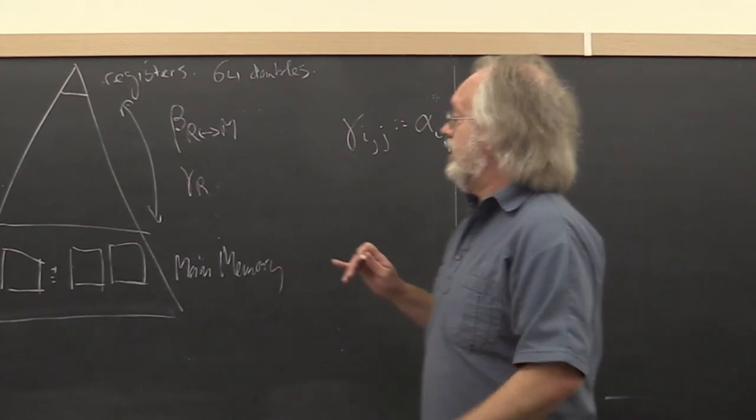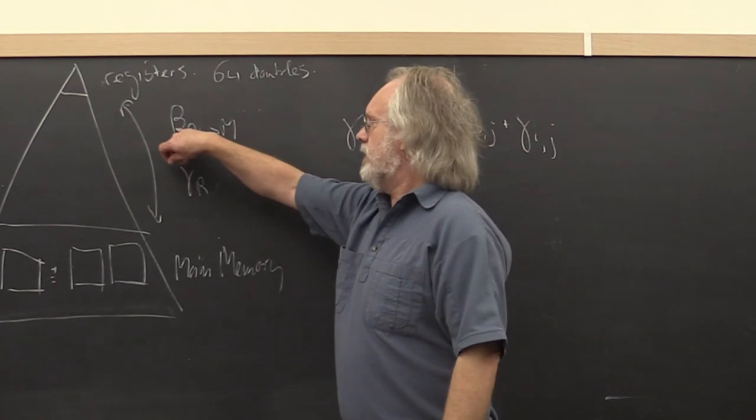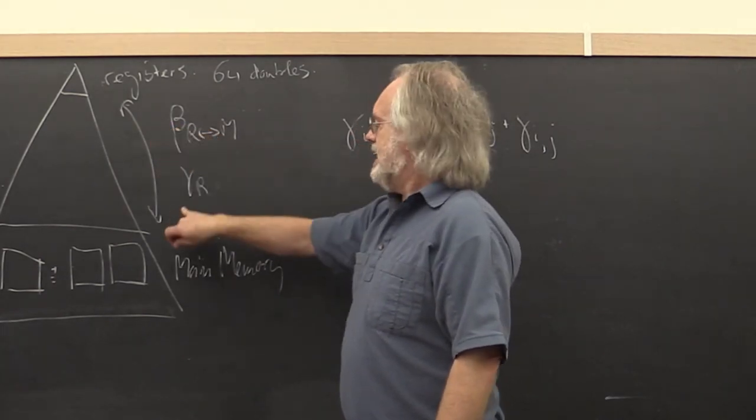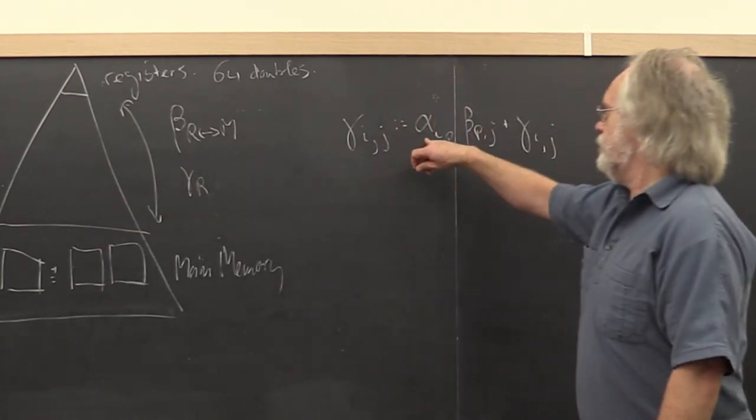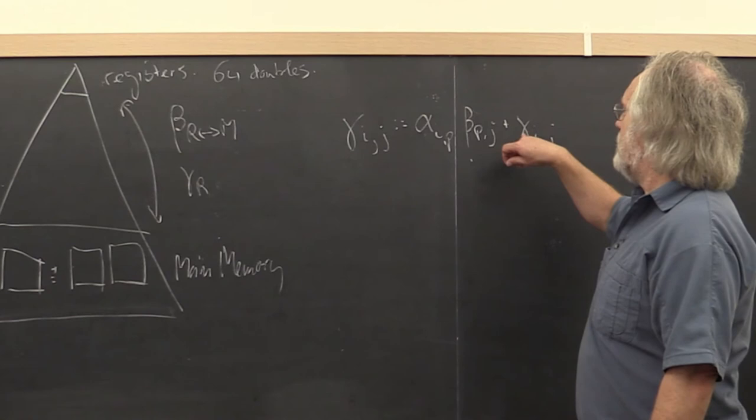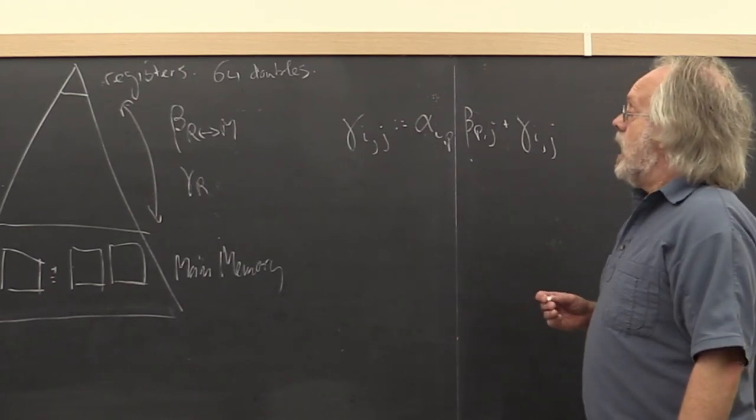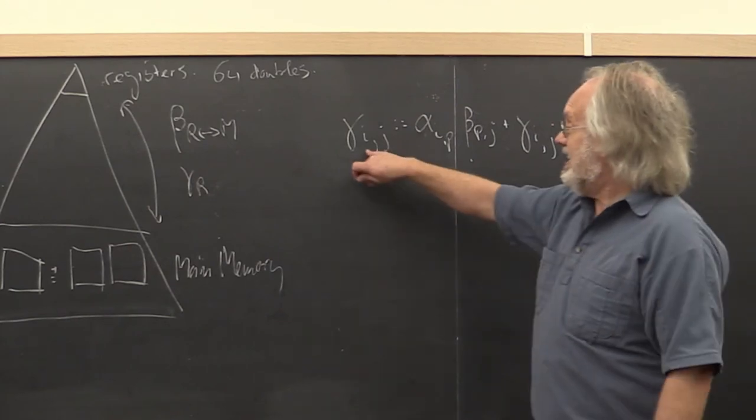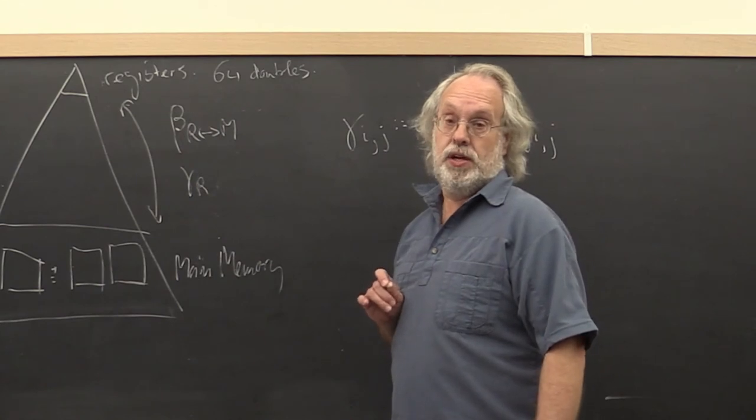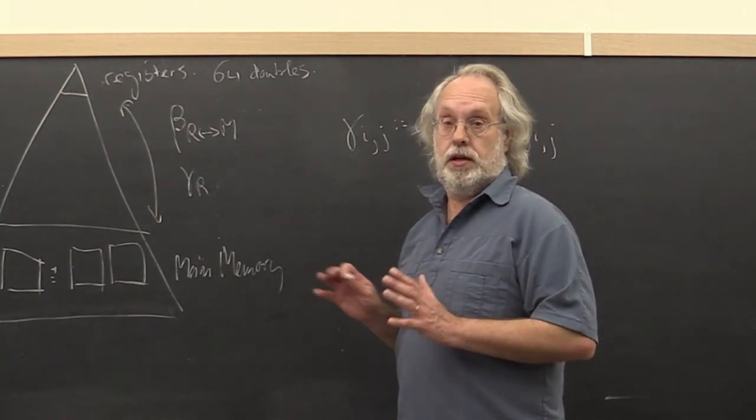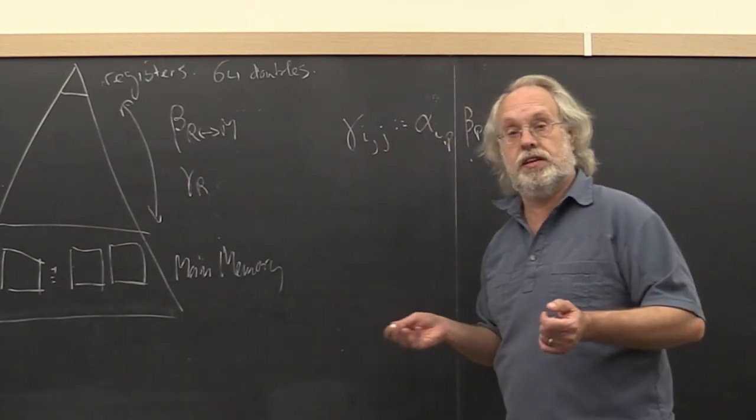Now unfortunately decades ago we chose to start labeling the cost of data movement with beta and the cost of computing with gamma, which of course creates a little bit of confusion with the alpha beta and gamma that comes up when we talk about the elements of matrices. But you notice that the indexing is inherently different between these different symbols and therefore it should be pretty easy to keep this apart. So let's see what we can do with this model and what kind of insights we can gain from it.